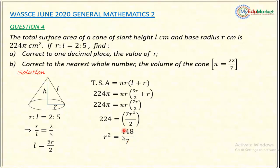Taking the square root of both sides: the square root of 64 is 8. So R, the radius of the cone, is 8 centimeters. Question A has now been answered.